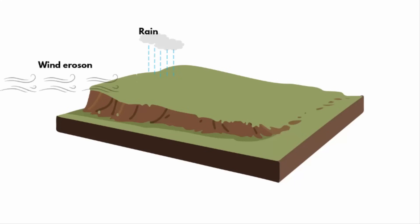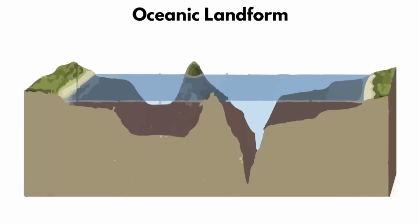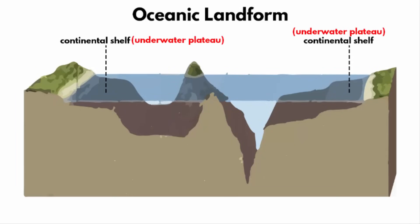Now, erosion due to wind, rainfall, and rivers can influence the shape of a plateau. Even in the oceans, you will find plateaus. Oceanic plateaus are of two types: one is made of continental crust, and the other is made of igneous rock due to solidification of lava.